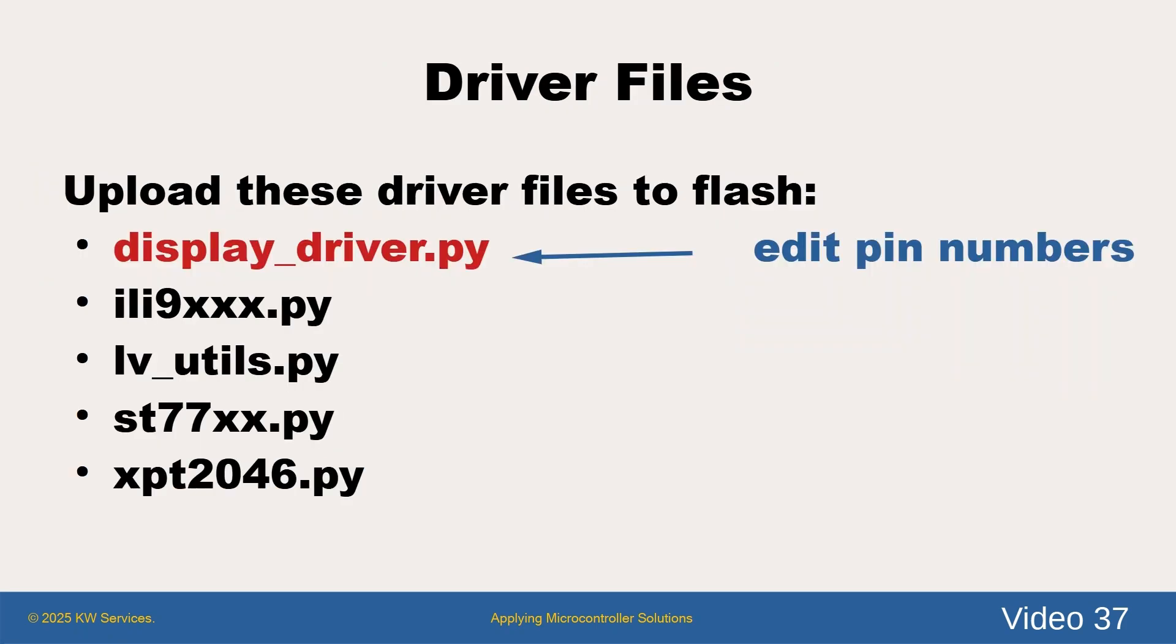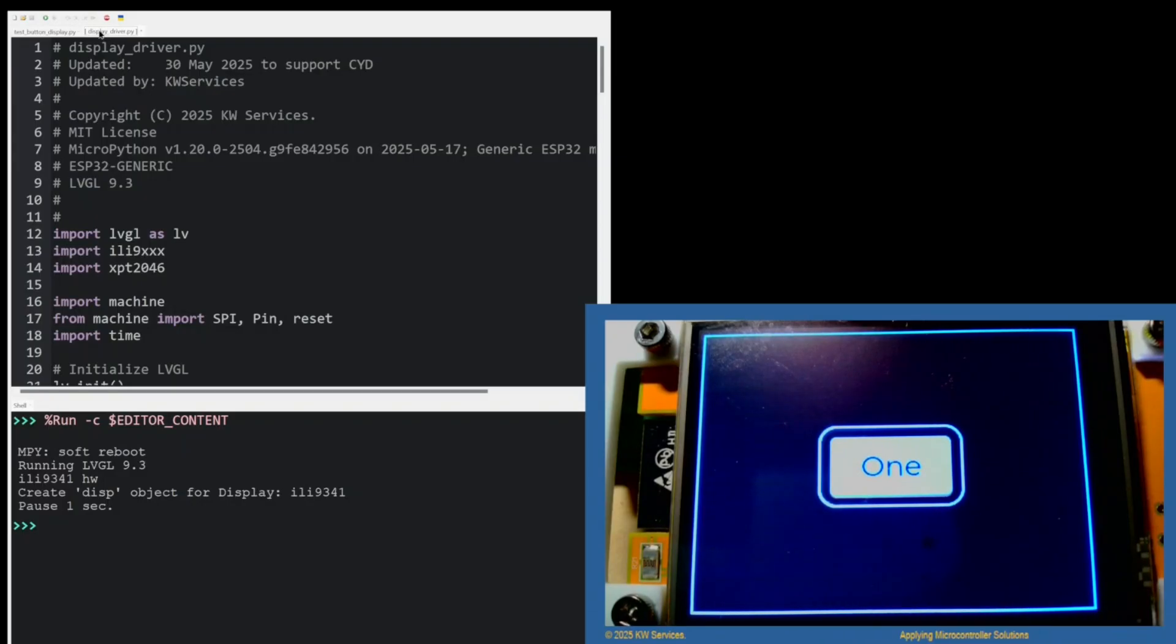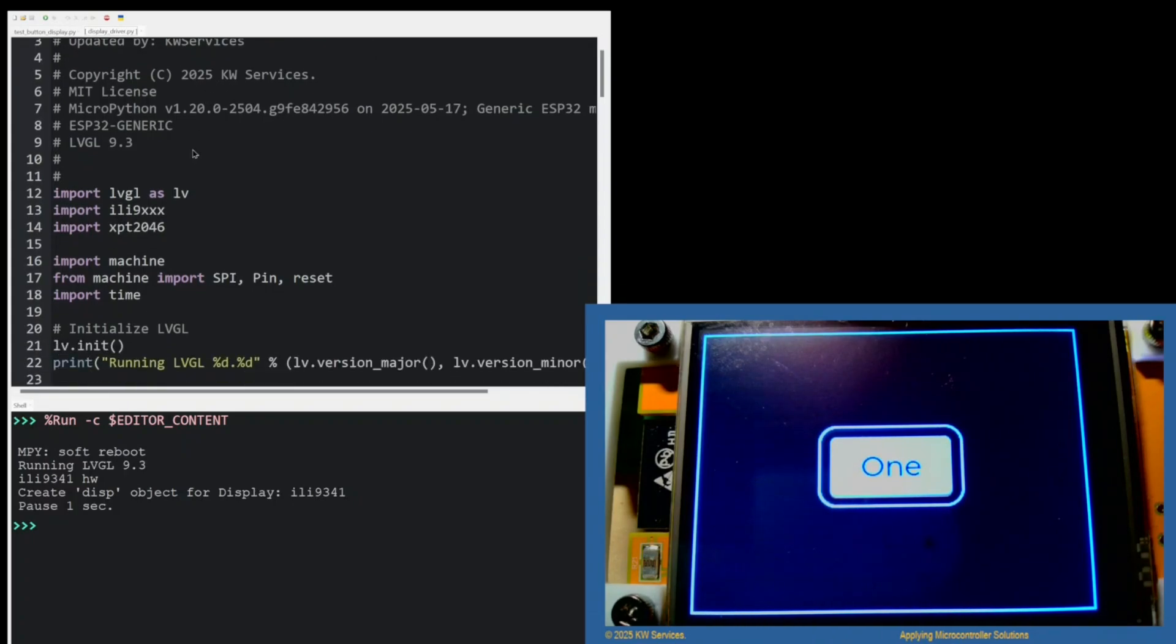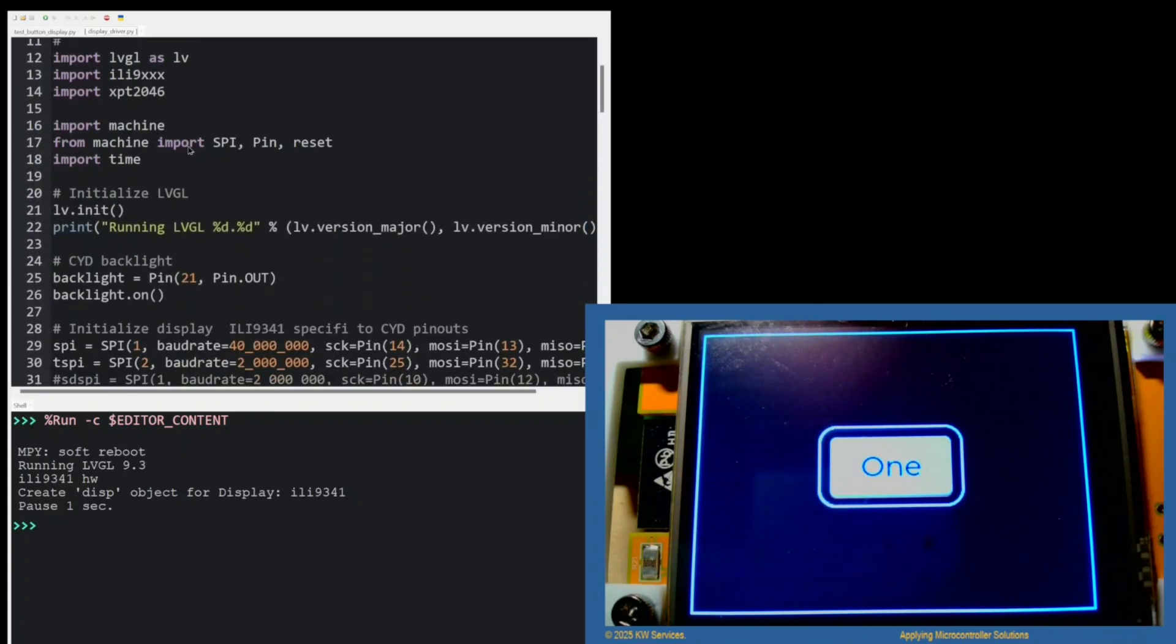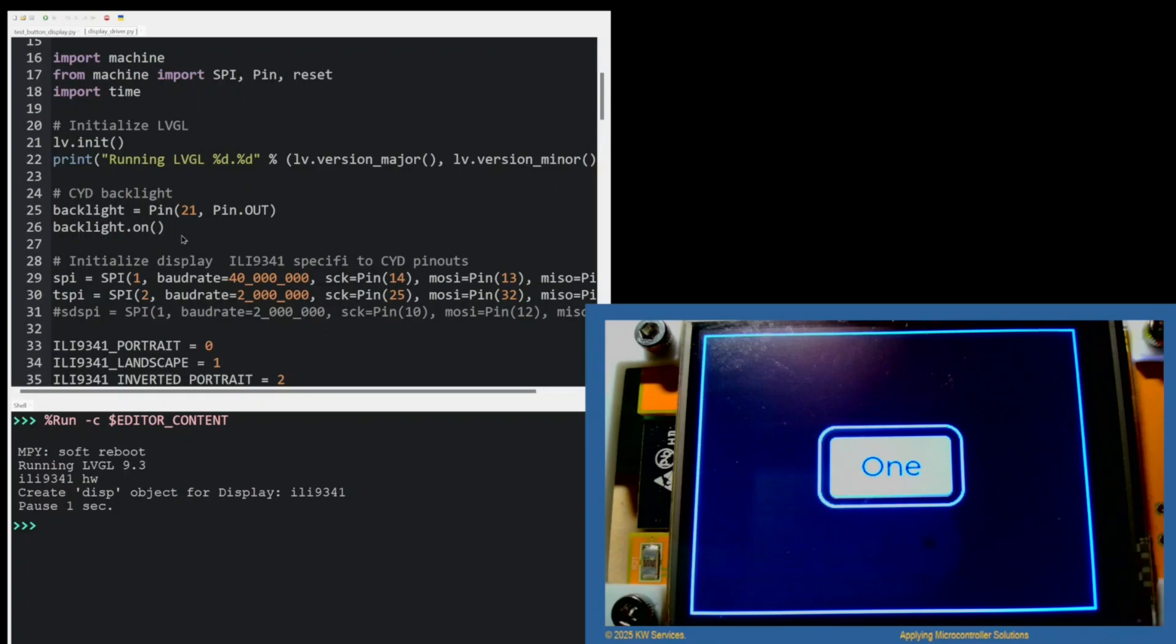Let's open the display driver on the CYD device and look at the backlight code and the pin numbers. I'm showing the display driver file. Now, I'm going to scroll down. The first thing we want to notice is that for the CYD device, pin number 21 must be configured for the backlight. You notice that when the driver runs, it's going to automatically turn the backlight on.